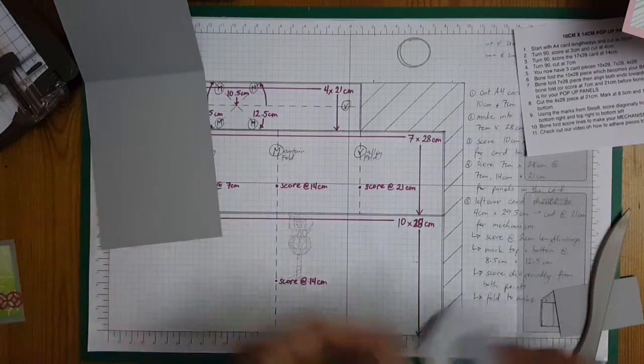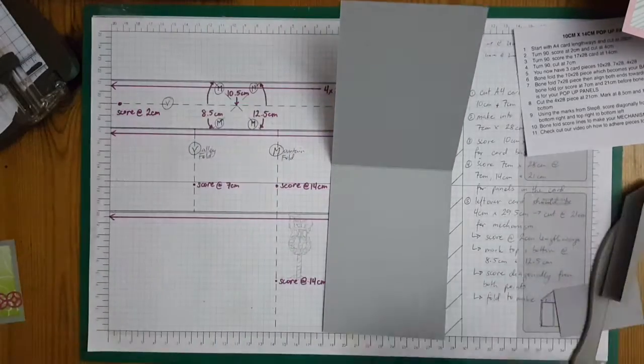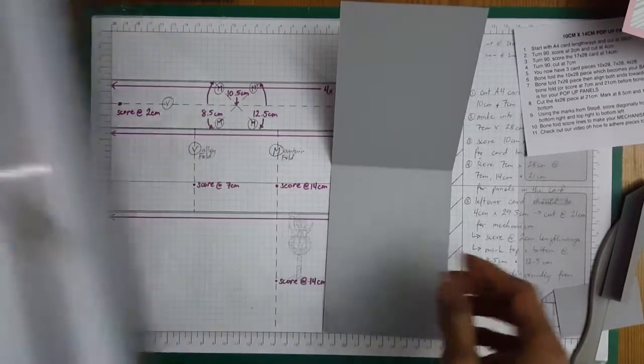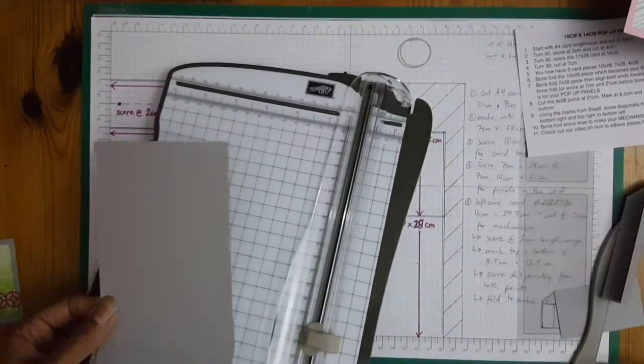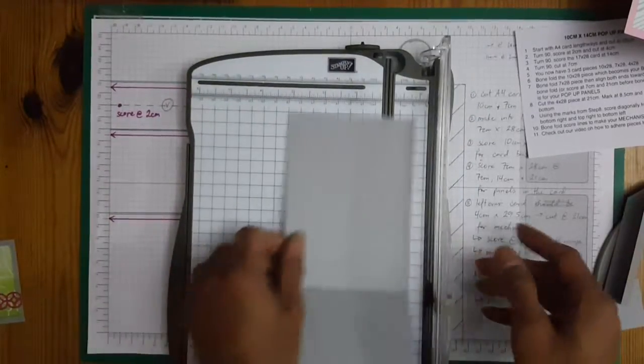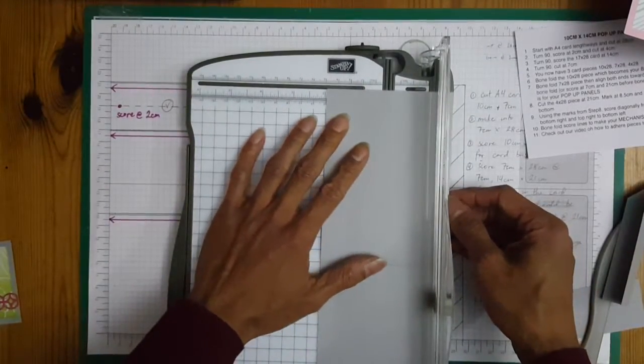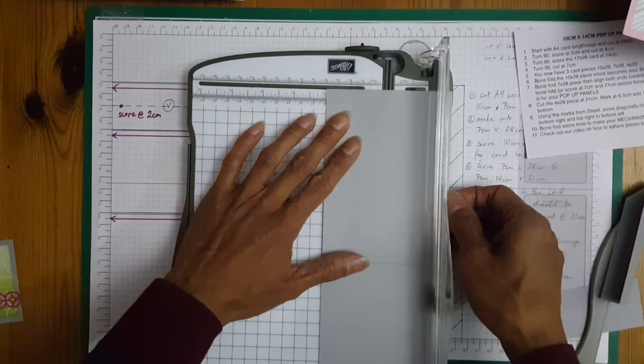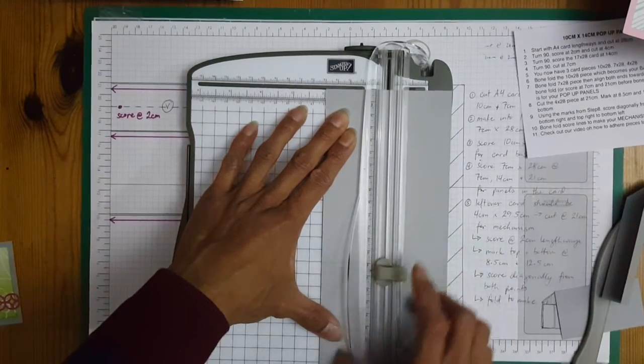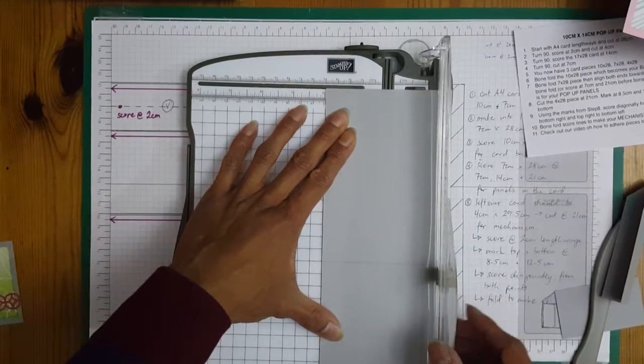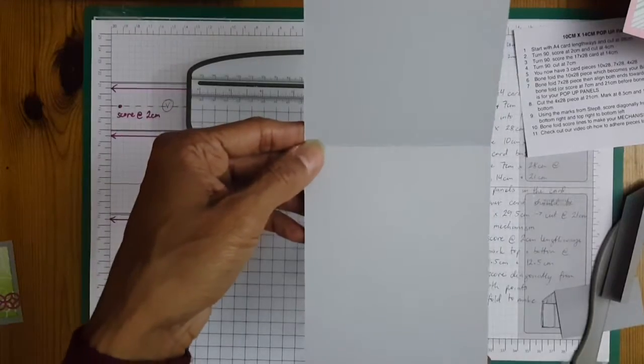So for the base card I actually line it up and just lightly score at 5 centimeters along there, so you can align the mechanism.